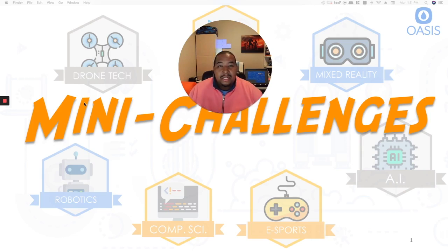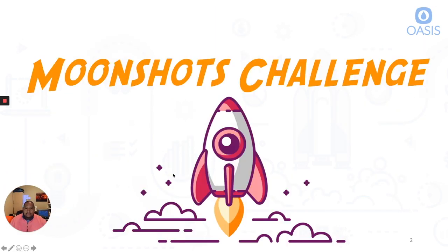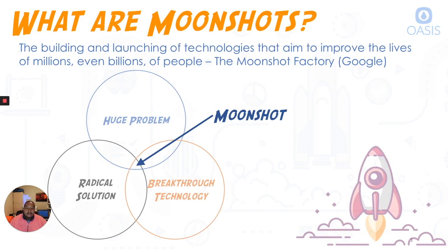So let's get into our first mini challenge called the Moonshot. Our first challenge is called the Moonshots Challenge. According to the Moonshot Factory, which is a Google company — they call it Google X now — a Moonshot is the building and launching of a technology that aims to improve the lives of millions, even billions of people. If you look at our Venn diagram here, a Moonshot really lies at the intersection of a huge problem, a radical solution, and a breakthrough technology, right where all three of those things intersect.